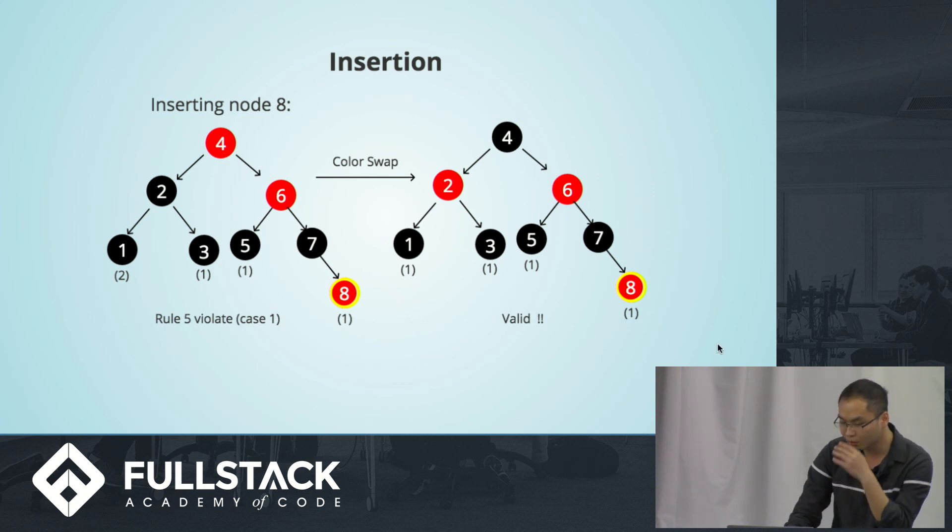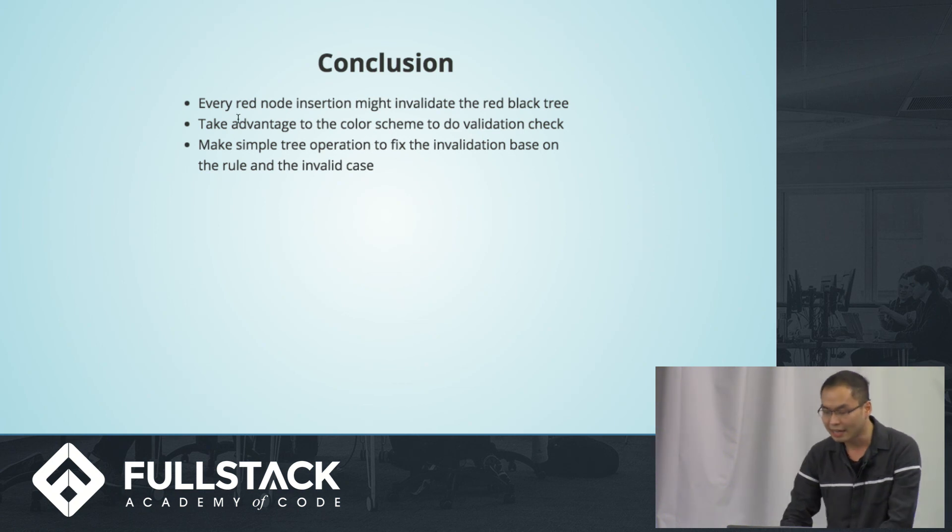I don't want to keep going because the path just keeps going forever. But if you follow those operation and validation approach, you end up having a really self-balancing tree. The conclusion is every red node insertion might invalidate the red-black tree. Take advantage of the color scheme to do validation check. The color scheme setup is not useless. It's always there to increase the performance. If you set up the color right, when you check the node by just reading the color around the local neighbor, it will just tell whether this tree is valid or invalid at all. Make simple tree rotation to fix invalidation case based on the rule and the invalid case.